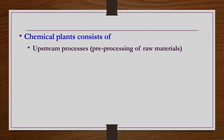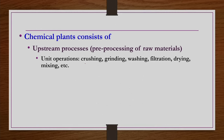What do we mean by pre-processing of raw materials? In nature, we may get the raw materials in very crude form and there may be several impurities associated with those raw materials. Also, they may be available in a size which is not suitable to conduct proper reaction. So some kind of pre-processing is required. These pre-processing operations involve crushing, grinding, washing, filtration, drying, mixing, etc. In all these processes, only physical or mechanical changes are occurring. There are no chemical changes occurring, and these are known as unit operations.